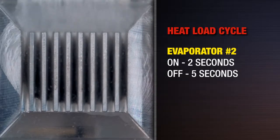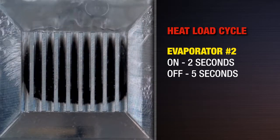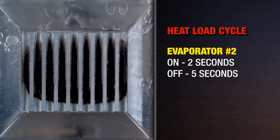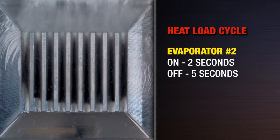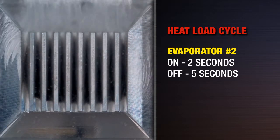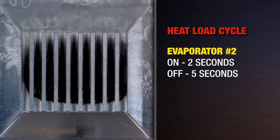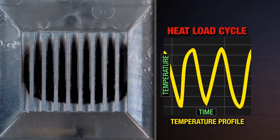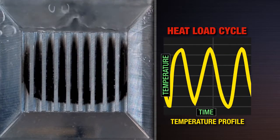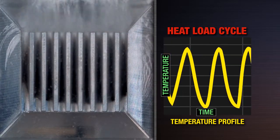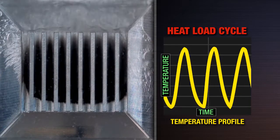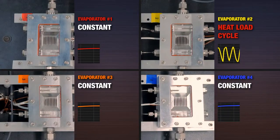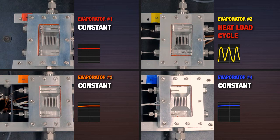Now we begin to cycle the heat load on evaporator number two. The heater is turned on for two seconds and off for five, simulating a variable heat load. You can observe that flow boiling at evaporator two becomes staggered and erratic as the temperature drops below the boiling point of the refrigerant. However, the performance of the other three evaporators remains stable.